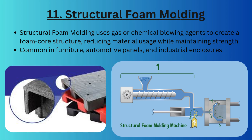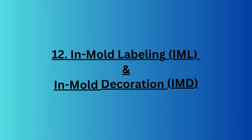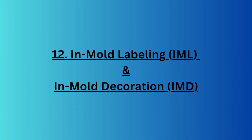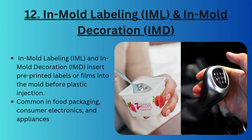If you need lightweight and strong parts, we use structural foam molding. It uses gas or a chemical blowing agent to create a foam core structure, reducing material usage while maintaining strength. It is commonly used for manufacturing furniture, automotive panels, and industrial enclosures.